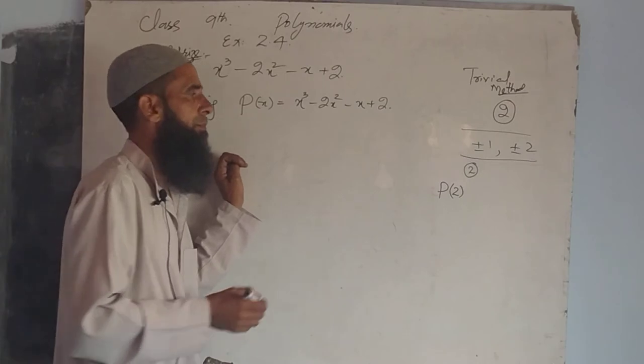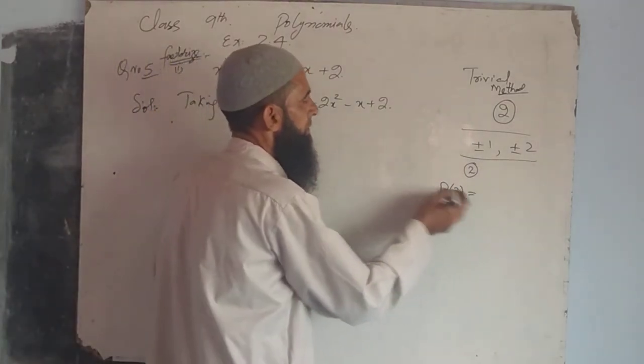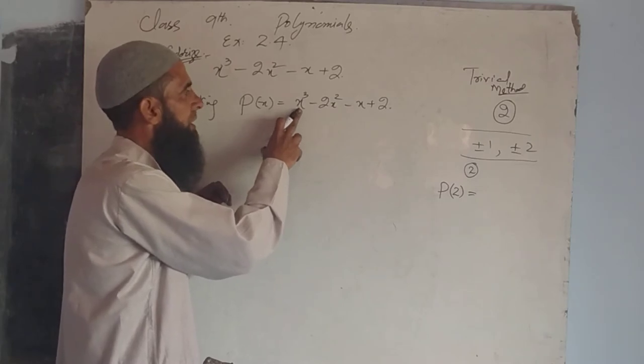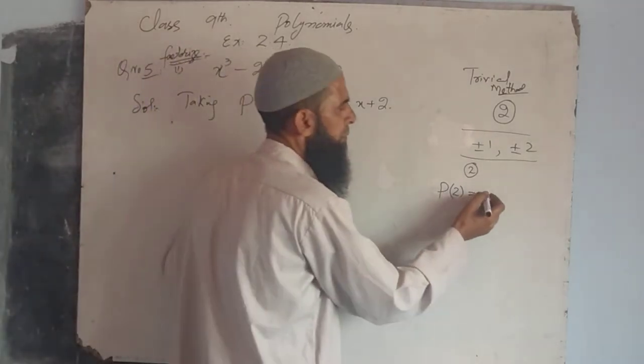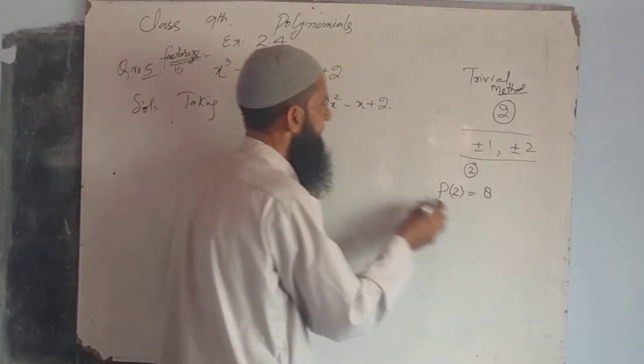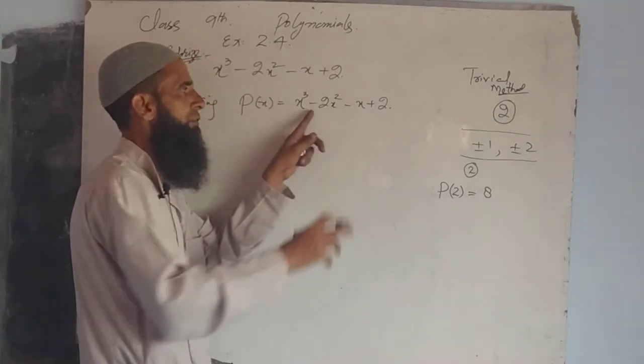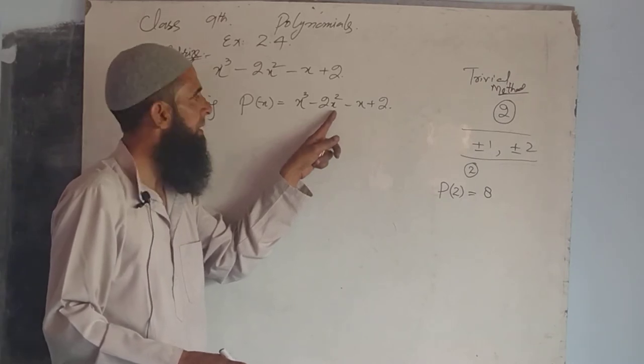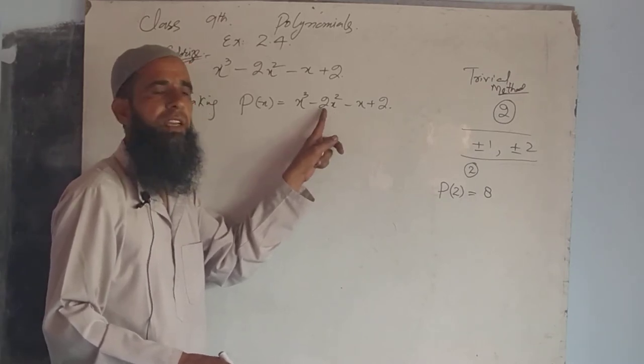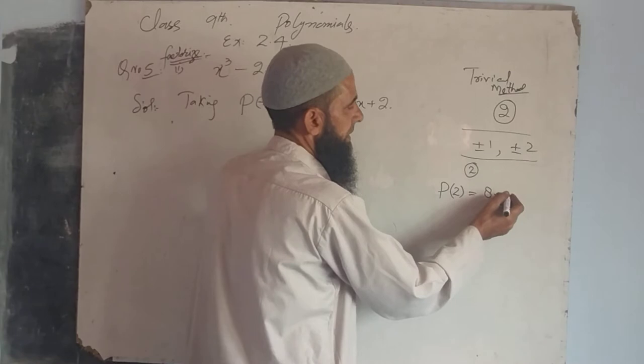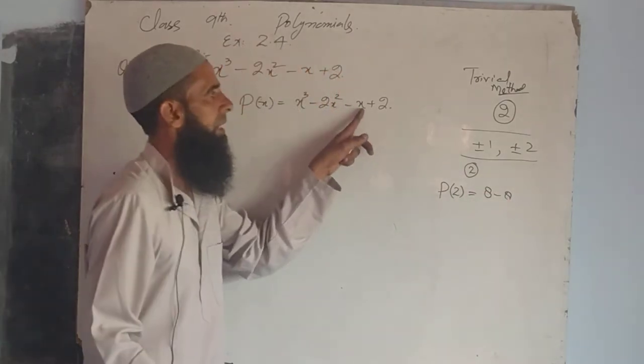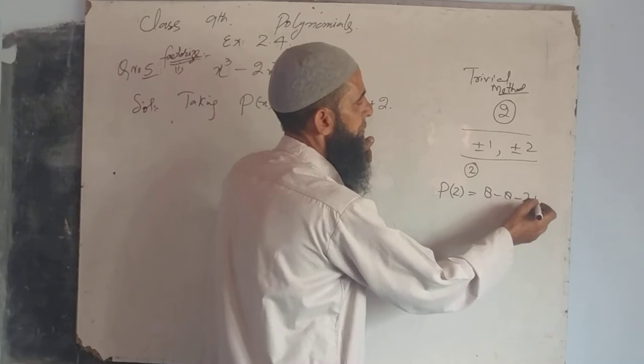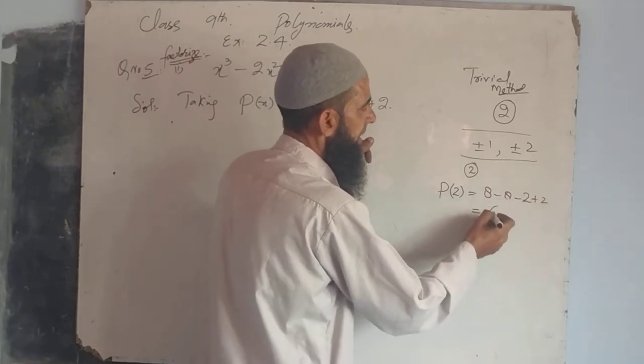What will happen? P(2) equals, that is replace x by 2. It is 2³, which is 8, minus 2 times 2² (that's 4 times 2, which is 8), so minus 8, minus 2 plus 2. Clearly we get here zero.